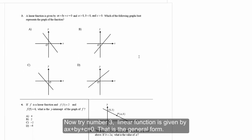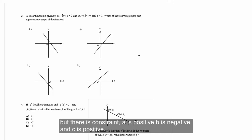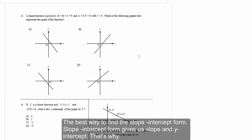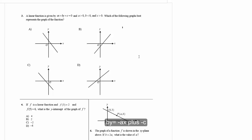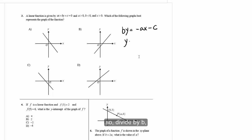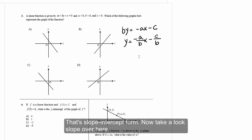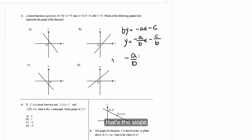Number three: A linear function is given by ax + by + c = 0 (general form), with the constraint that a is positive, b is negative, and c is positive. To find the slope-intercept form, solve for y: by = -ax - c, then divide by b. So y = (-a/b)x - (c/b). Now look at the slope: it is -a/b.